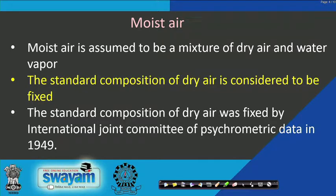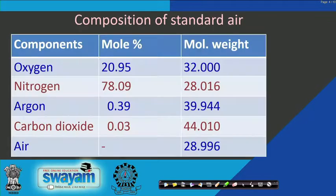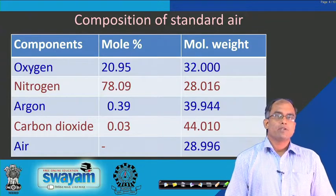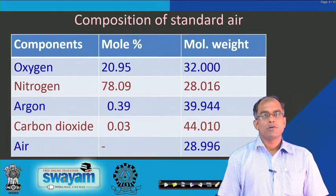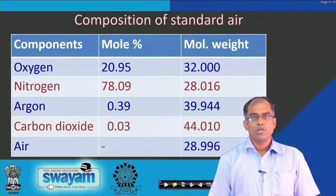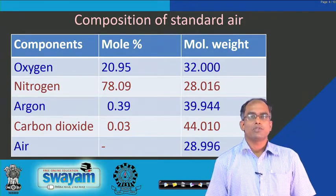The standard composition of dry air is considered to be fixed, as established by the International Joint Committee of Psychrometric Data in 1949. According to this committee, the composition of dry air by mole percentage is: oxygen approximately 21%, nitrogen 78%, argon 0.39%, and carbon dioxide only 0.03%. The average molecular weight of air is assumed to be 28.996 based on this composition.